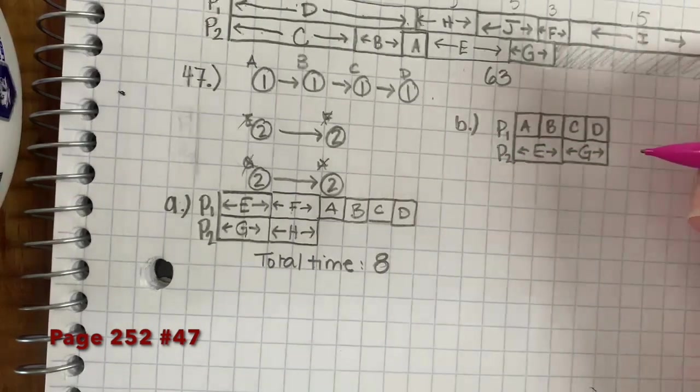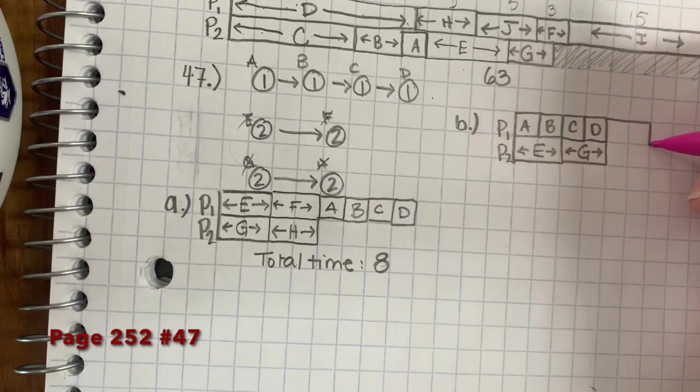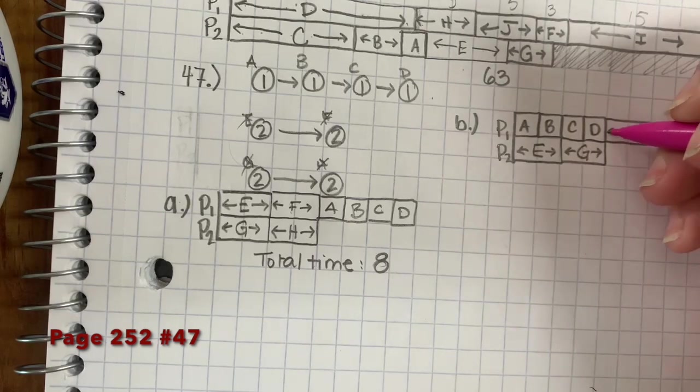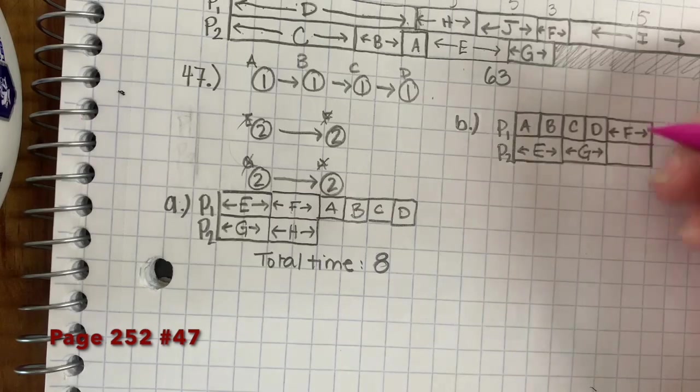So now, I can do this in any order. I'm going to give person 1, F, just because of the alphabetical order. F, and then I'm going to give person 2, H.